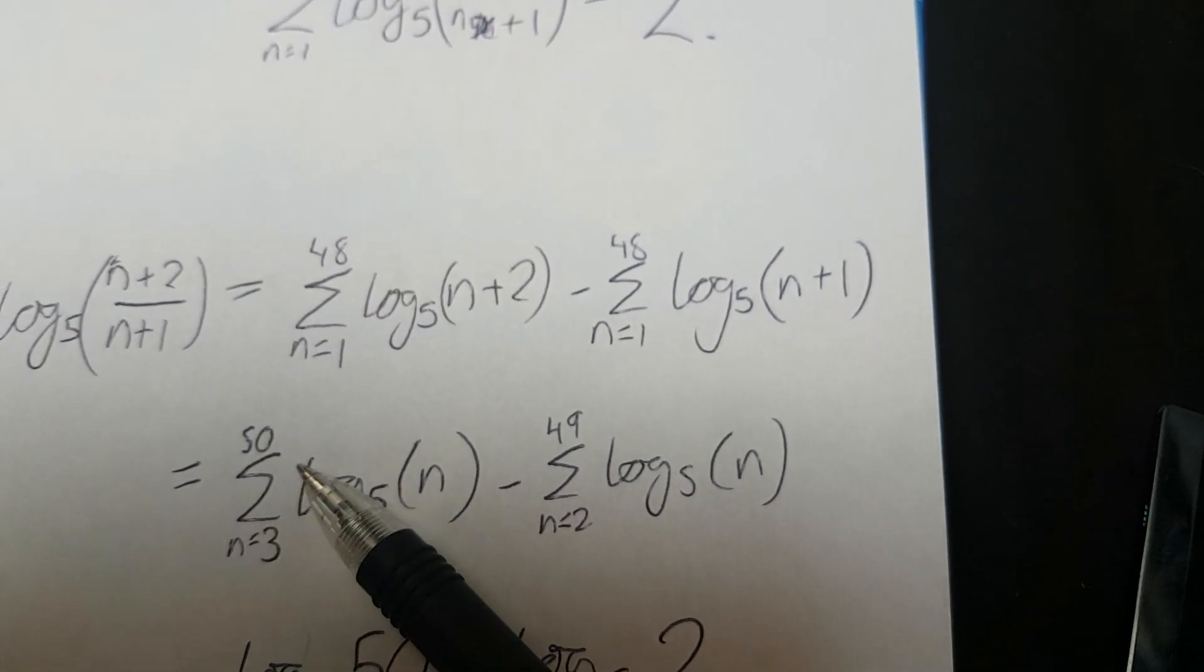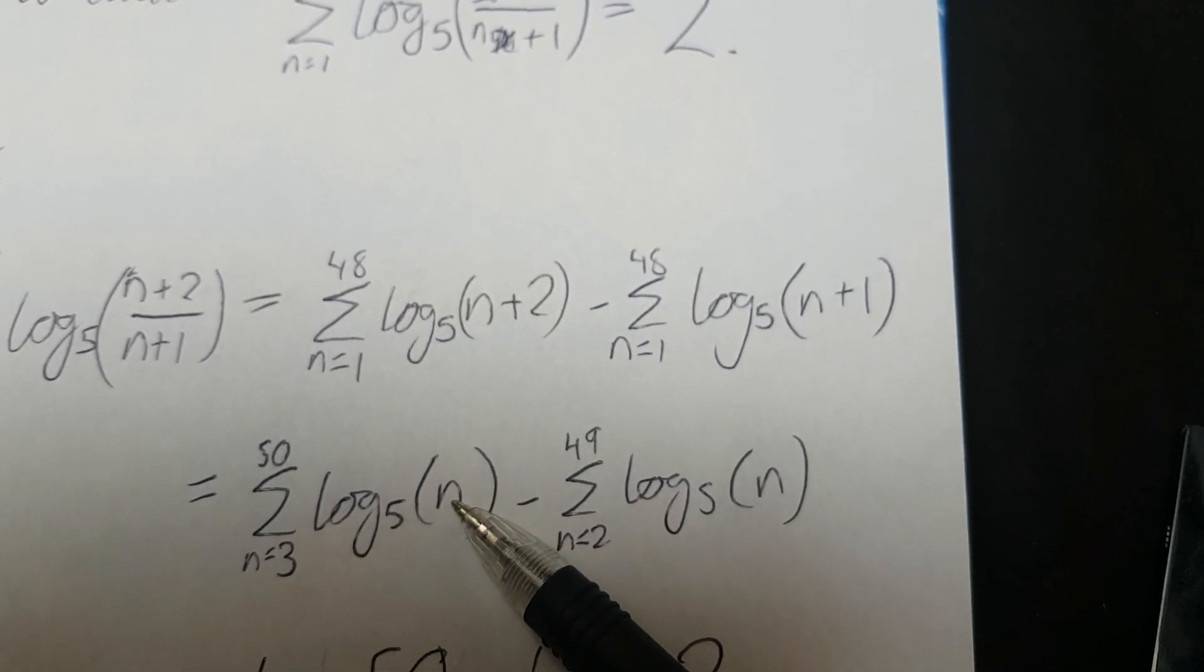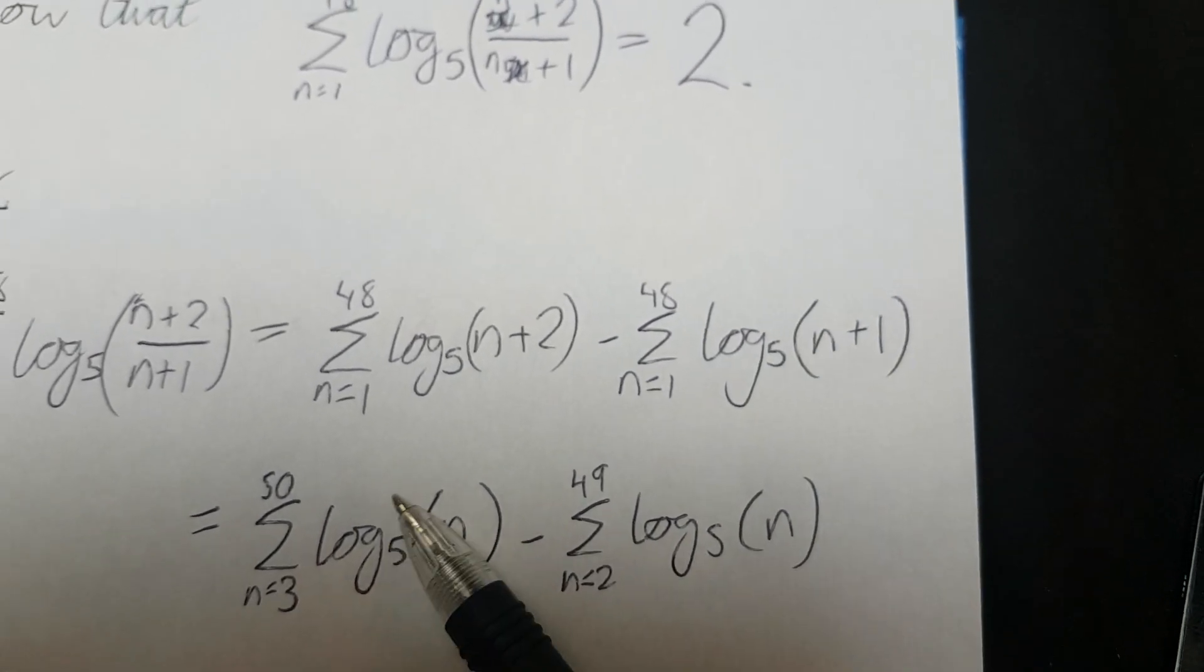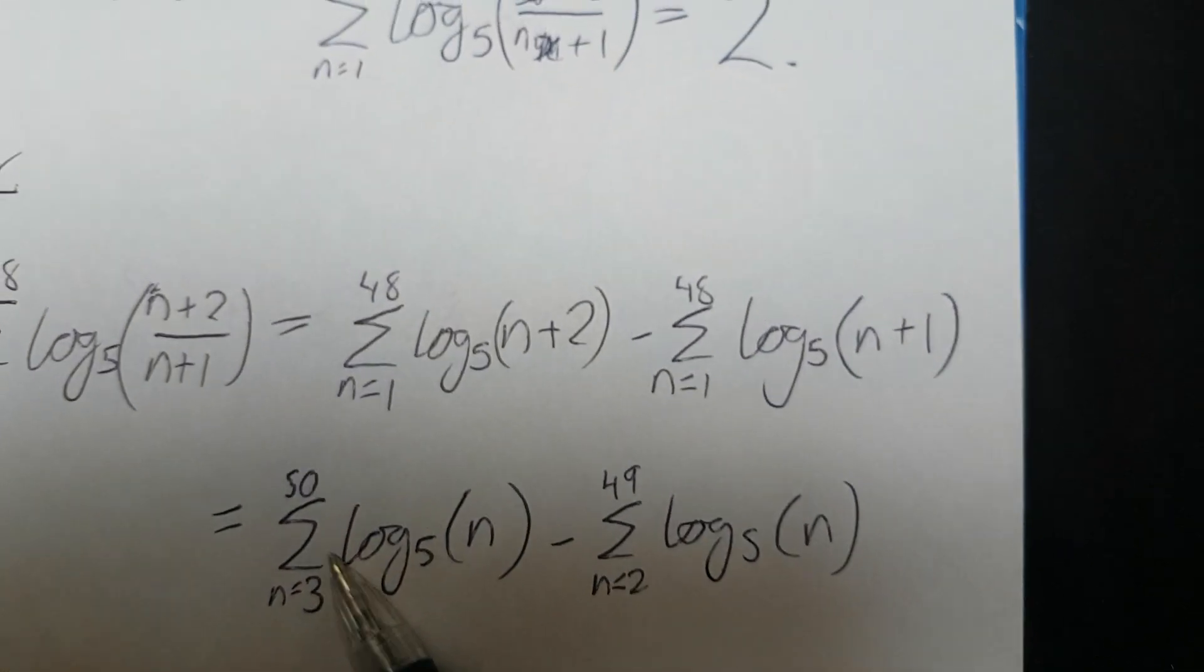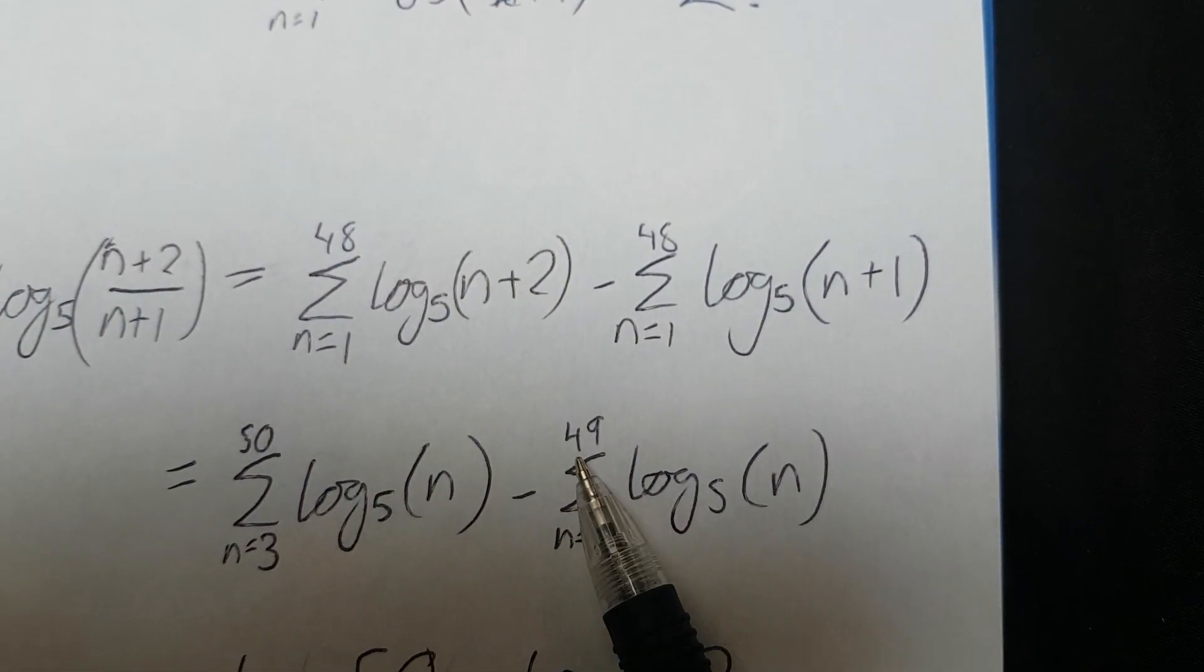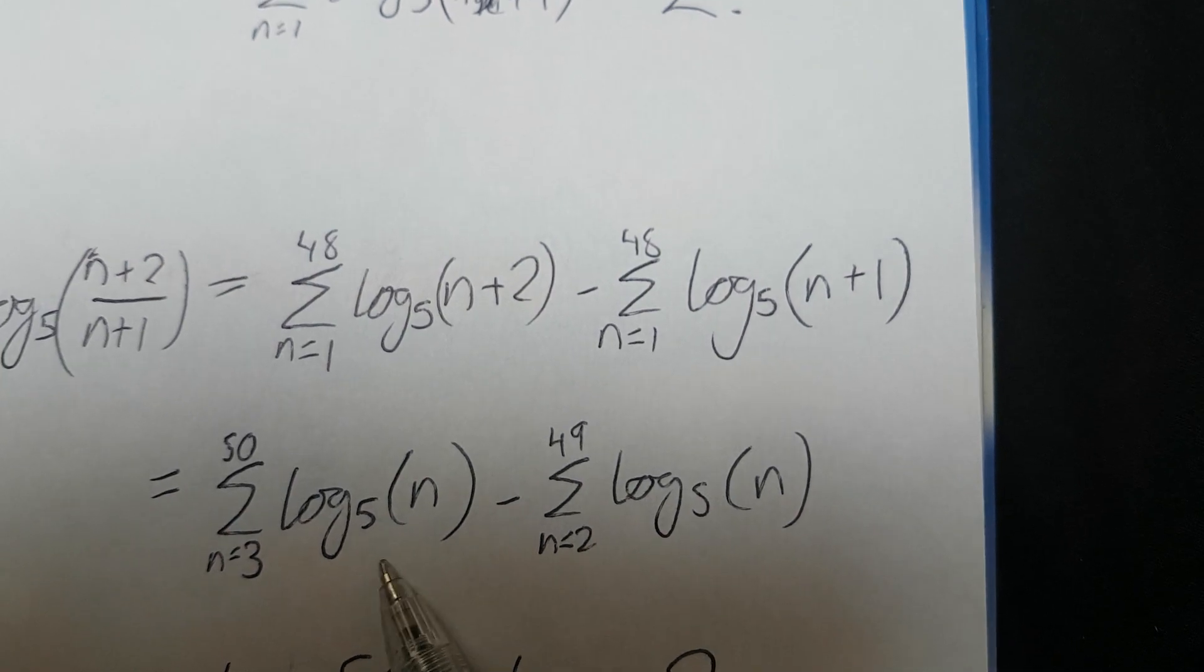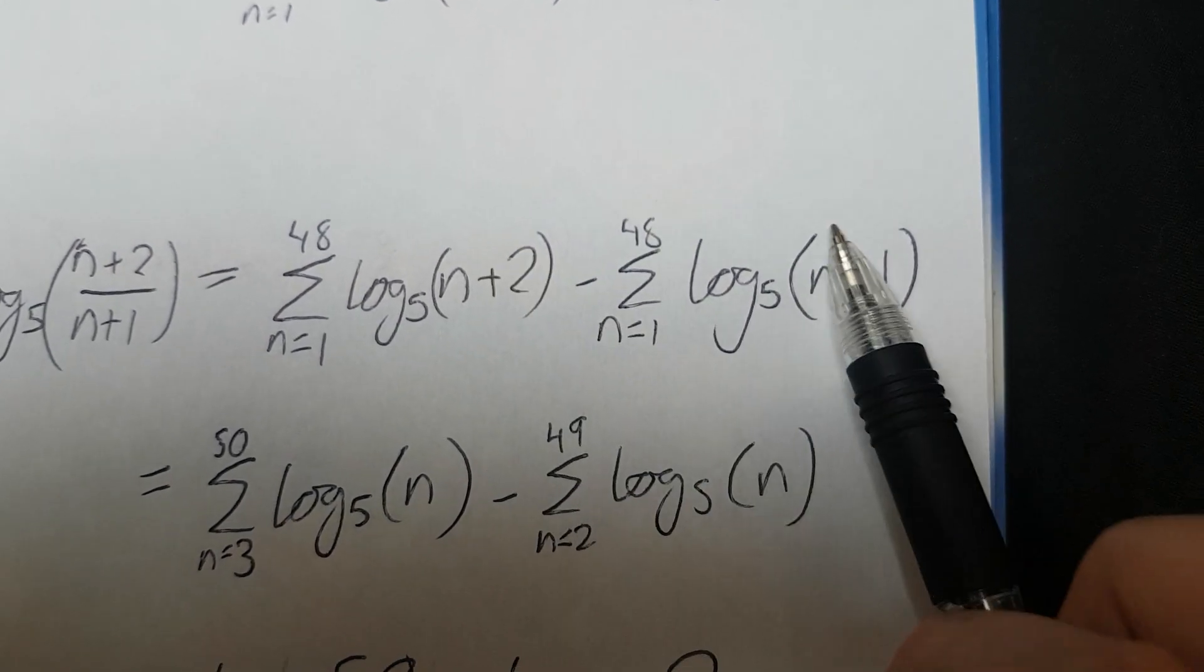So you can just basically shift these and make this n. You could just make them both n plus 1, but make it n so it looks simpler. So you have this. You go from 3 to 50, and 2 to 49 of log_5 n. So you've got the same thing in both. This one you couldn't because it was more complicated.